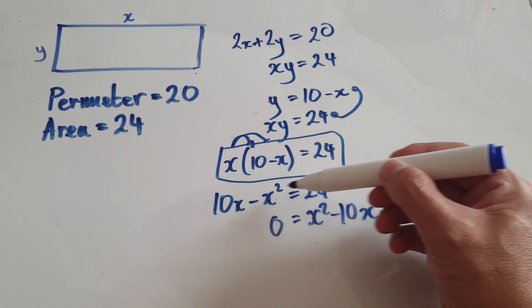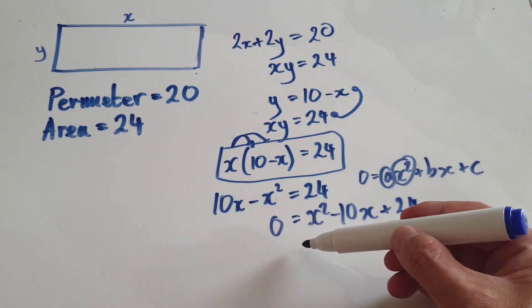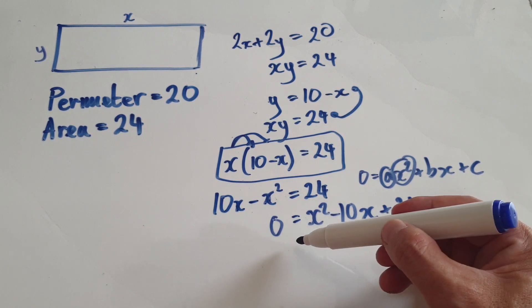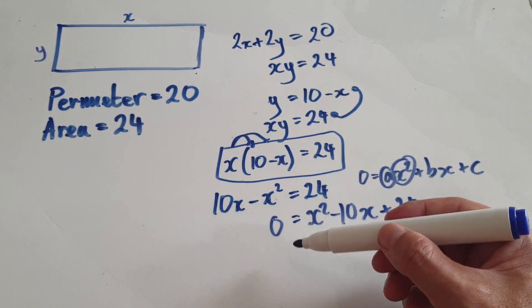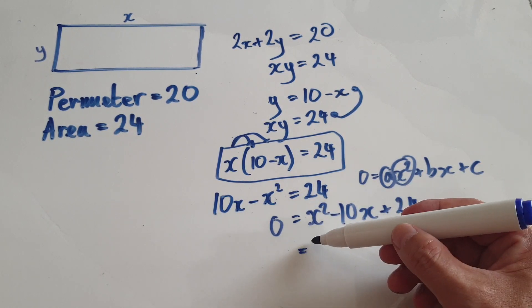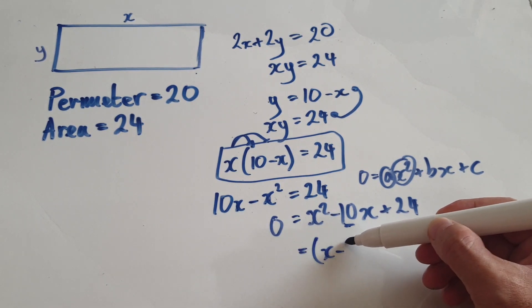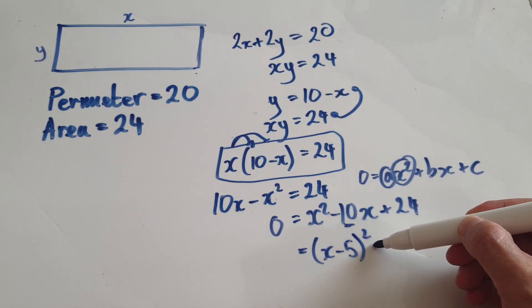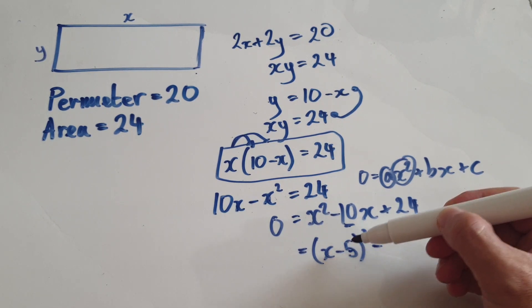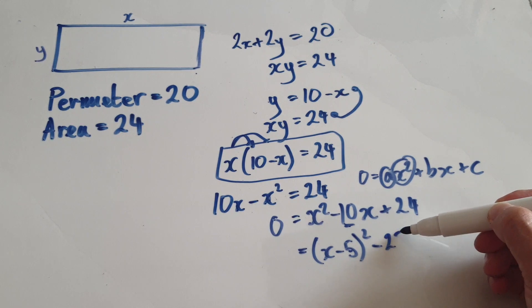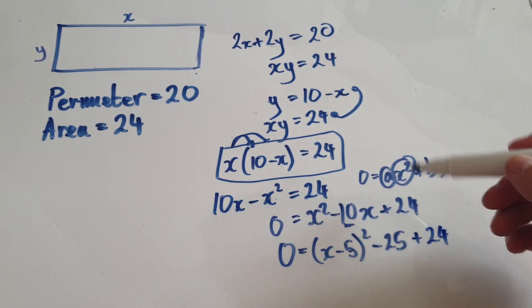So it really boils down to us trying to solve this. There are lots of ways of solving this now, but I'm just going to complete the square. So it's always going to be half of this: x minus 5 squared, take away the rubbish. The rubbish will be this thing times by itself, 25, and then carry this thing down plus 24 equals 0.